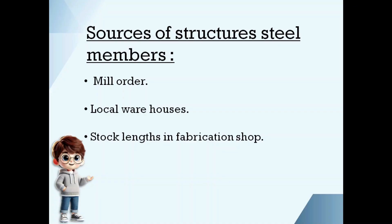Here are the sources of steel members: mill order, warehouses, and stock lengths in fabrication shop. The fabricator will order the required amount of steel where the structural steel shapes are casted to the required stock lengths. This order should be given usually before 6 months itself.